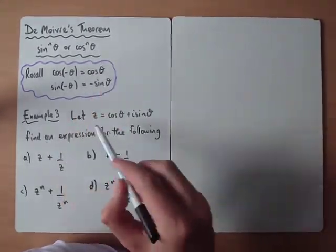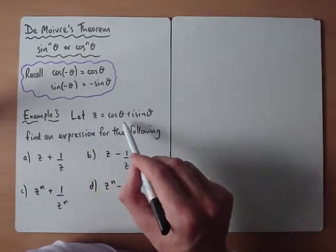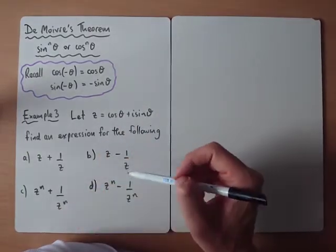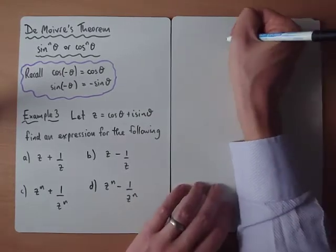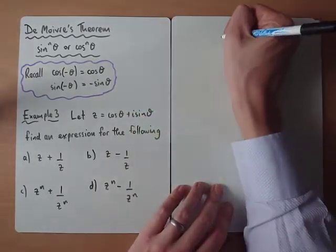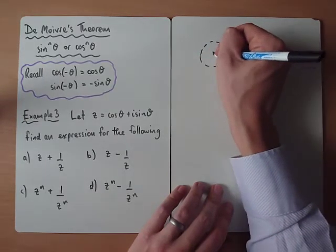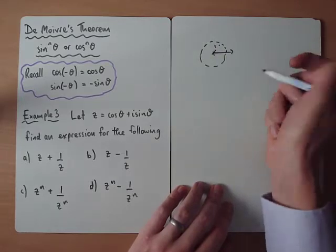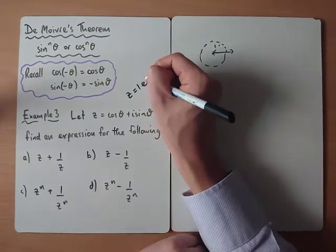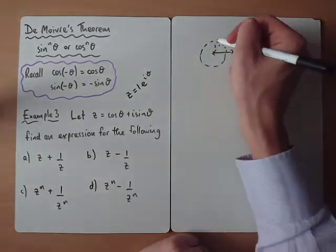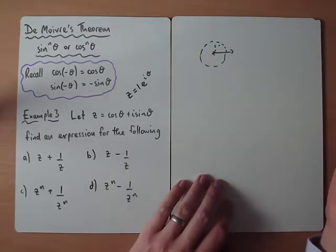So quite often on this style of question, it will say let z equal cos theta plus i sine theta. Essentially what they're saying is the z in this topic just represents a general complex number, which obviously would have a magnitude of 1. So we can just think about this complex number as being somewhere with an argument. If we wrote it in exponential form, it would be e to the i theta. So the magnitude is 1 and the argument is somewhere, so we're somewhere along this unit circle.